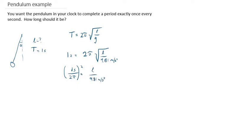So now I just rearranged things before I punched anything in my calculator. So I could make a final statement for l that has to be equal to 9.81 meters per second squared, times 1 second over 2π, which has to get squared.